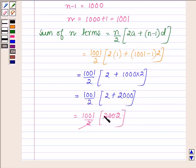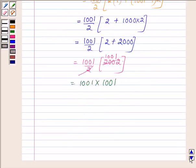Now 2 plus 2000 is 2002, so we have 1001 into 1001, which is equal to 1,002,001.